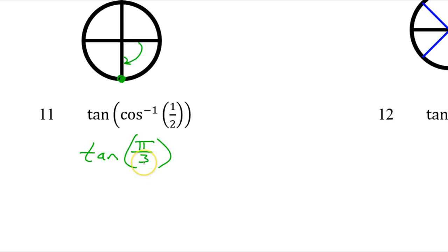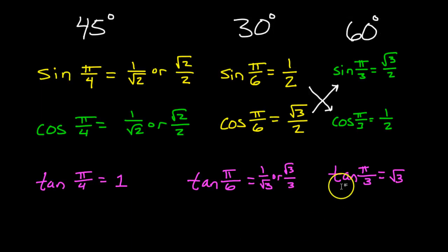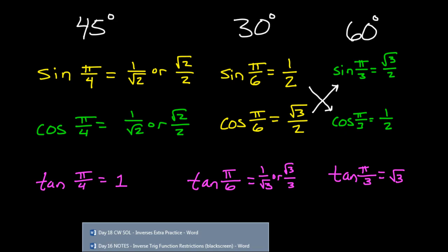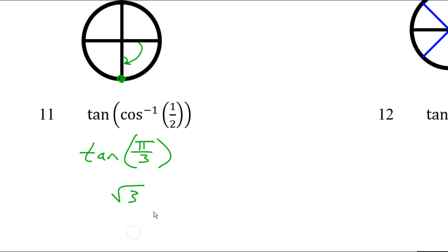What's the tangent of pi over 3? That should just be radical 3. Tangent of pi over 3 is radical 3 — that's one of the values we are supposed to memorize. So the final answer is radical 3.